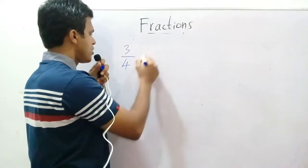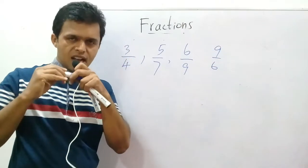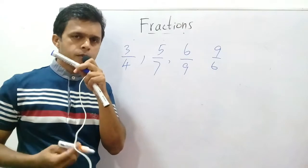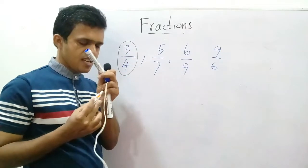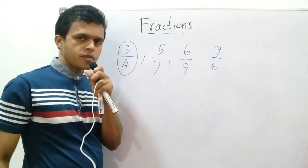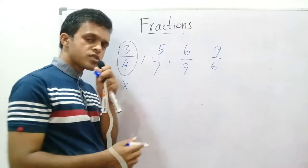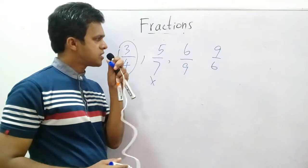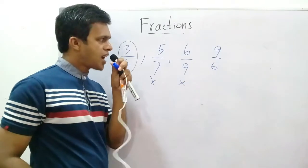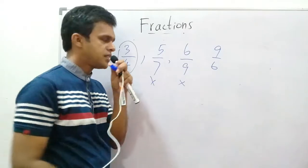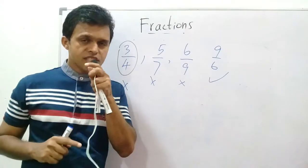Think of these: three over four, five over seven, six over nine, nine over six — underline the improper fractions. Can we take three over four as an improper fraction? No, it is a proper fraction. Five over seven? No, proper. Six over nine? No, proper. Nine over six? Yes, that is an improper fraction.